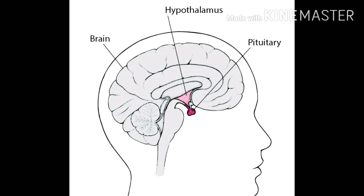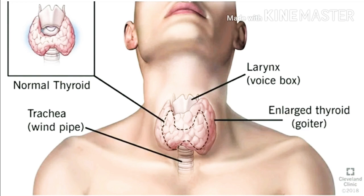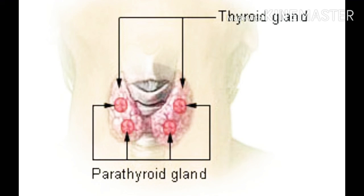Other hormones released by the pituitary gland include anti-diuretic hormone (ADH) and oxytocin. ADH reduces excessive loss of water in urine by helping concentrate urine. The thyroid gland, present in the neck, is the largest endocrine gland and releases thyroxine hormone, which controls the metabolism of carbohydrates, proteins, and fats, helping in growth and development. Deficiency of thyroxine causes goiter. The parathyroid gland releases parathormone, which controls calcium and phosphorus levels in the blood.